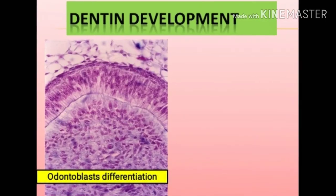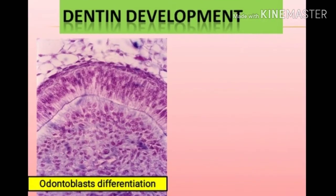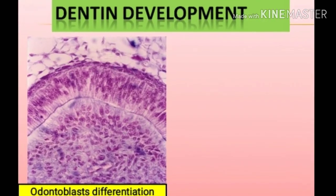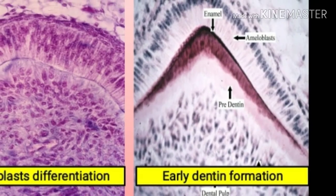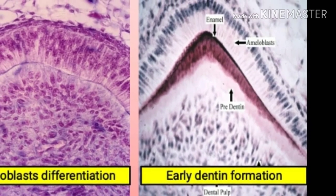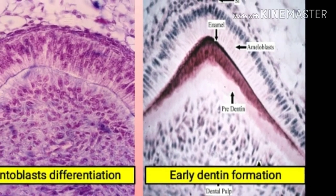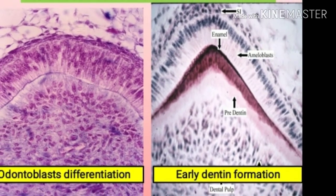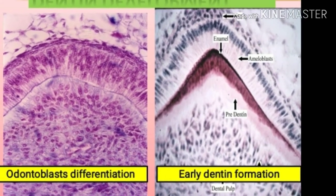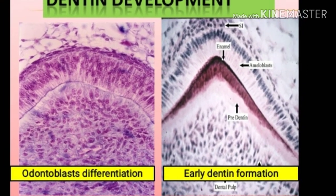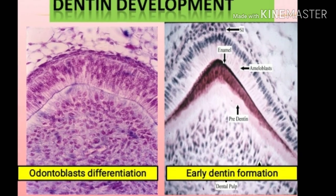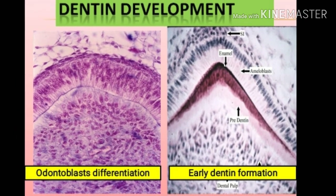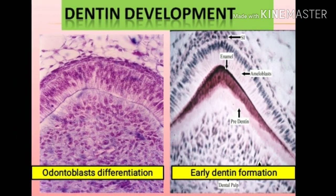The figure shows dentine development and odontoblast differentiation. The next figure shows early dentine formation with dental pulp, pre-dentine, ameloblasts, enamel, and stratum intermedium as shown. Thank you so much for watching the video and don't forget to subscribe to the channel.